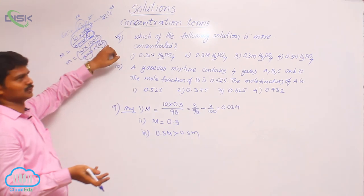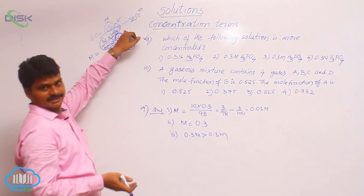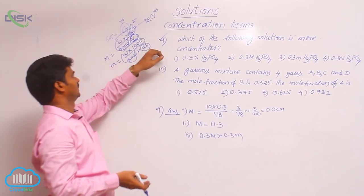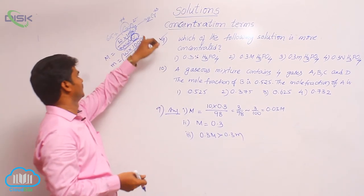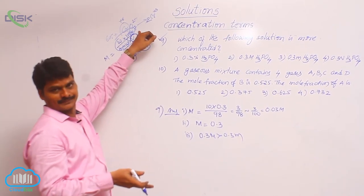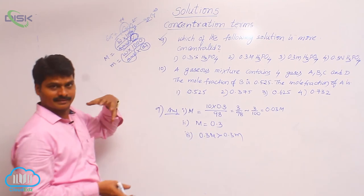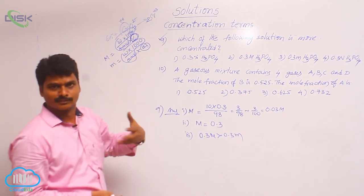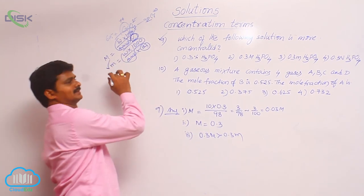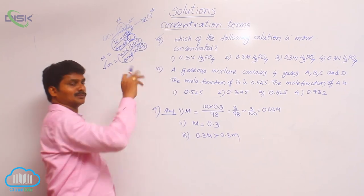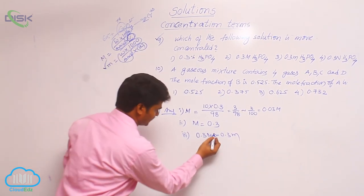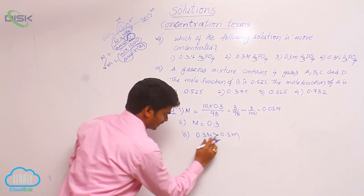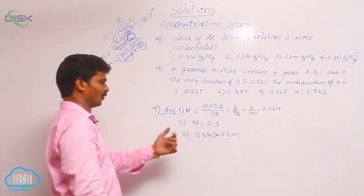So when you compare this volume term, here only solvent, here solute plus solvent. So where is more solvent? In the second case. That means if solvent is more, concentration is less. That is why 0.3 molar is always greater than 0.3 molal.